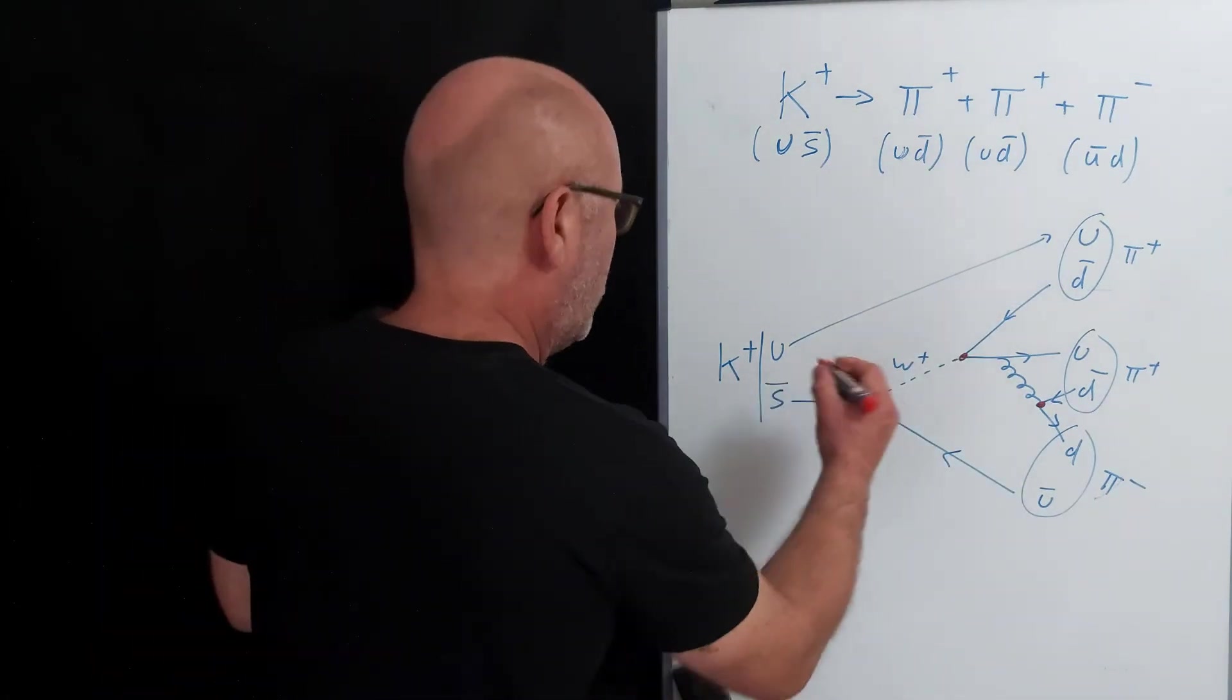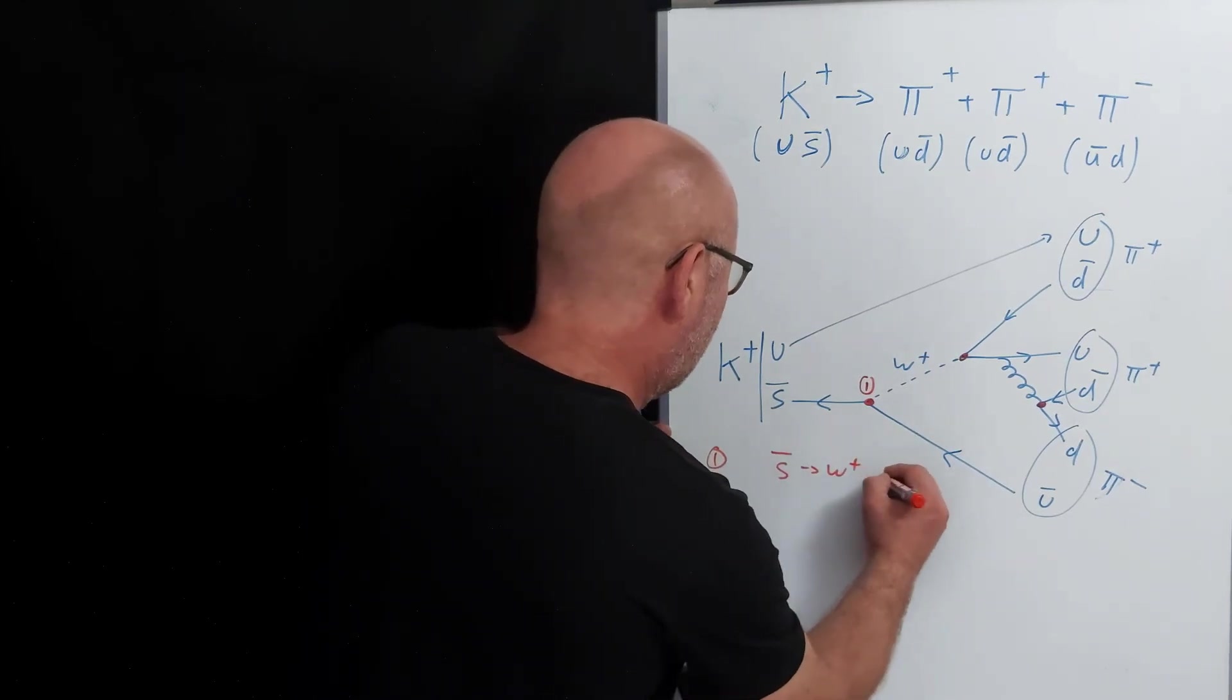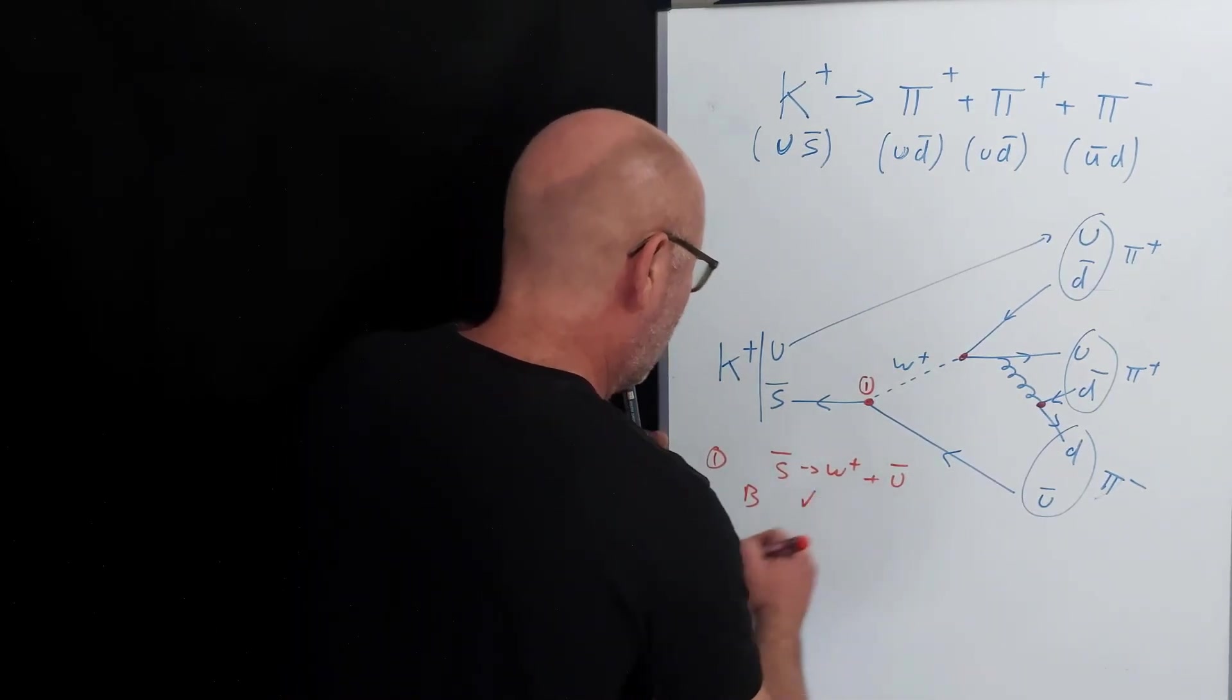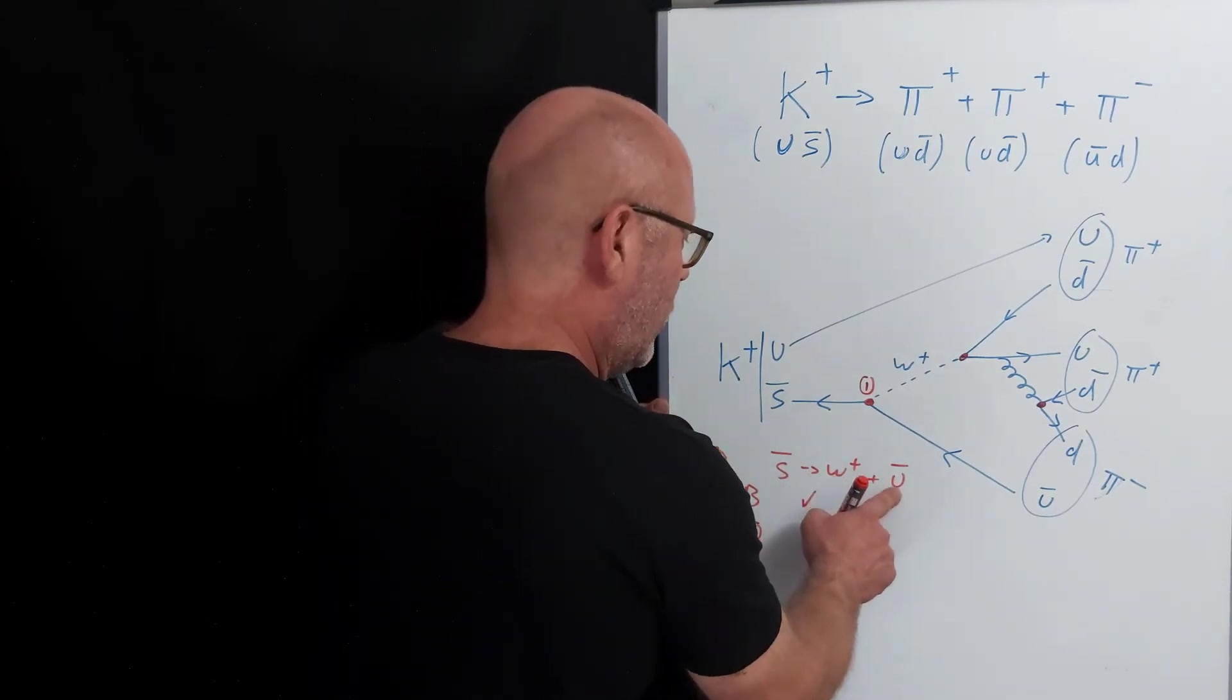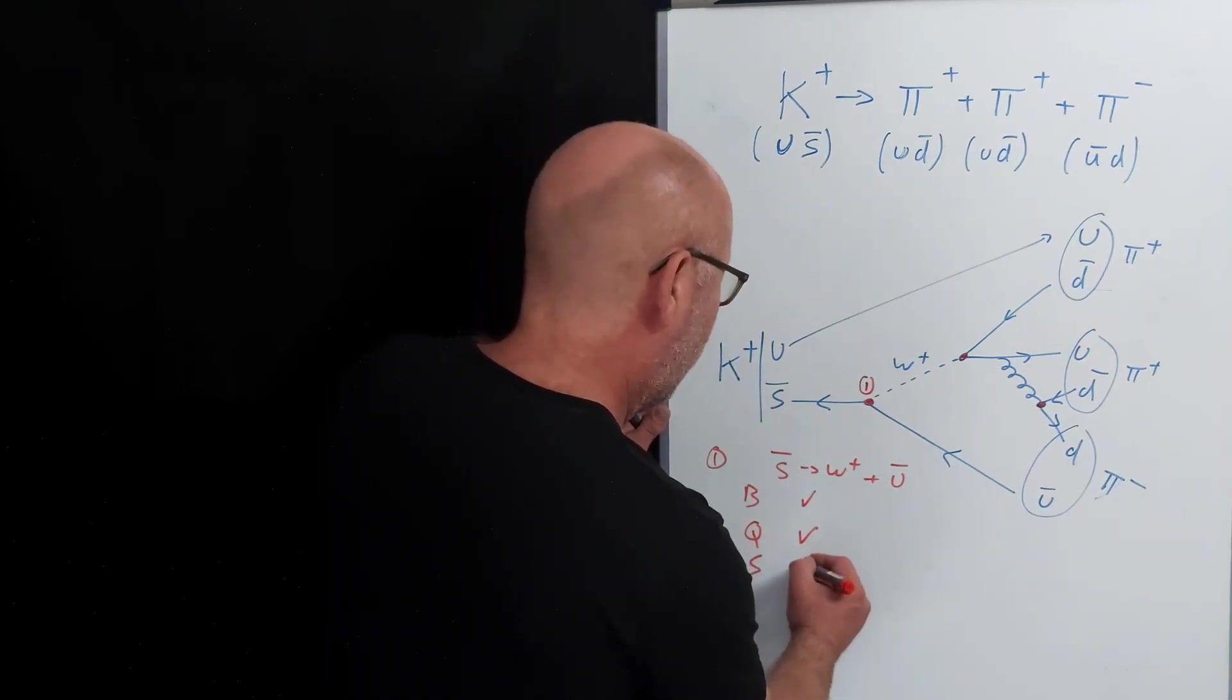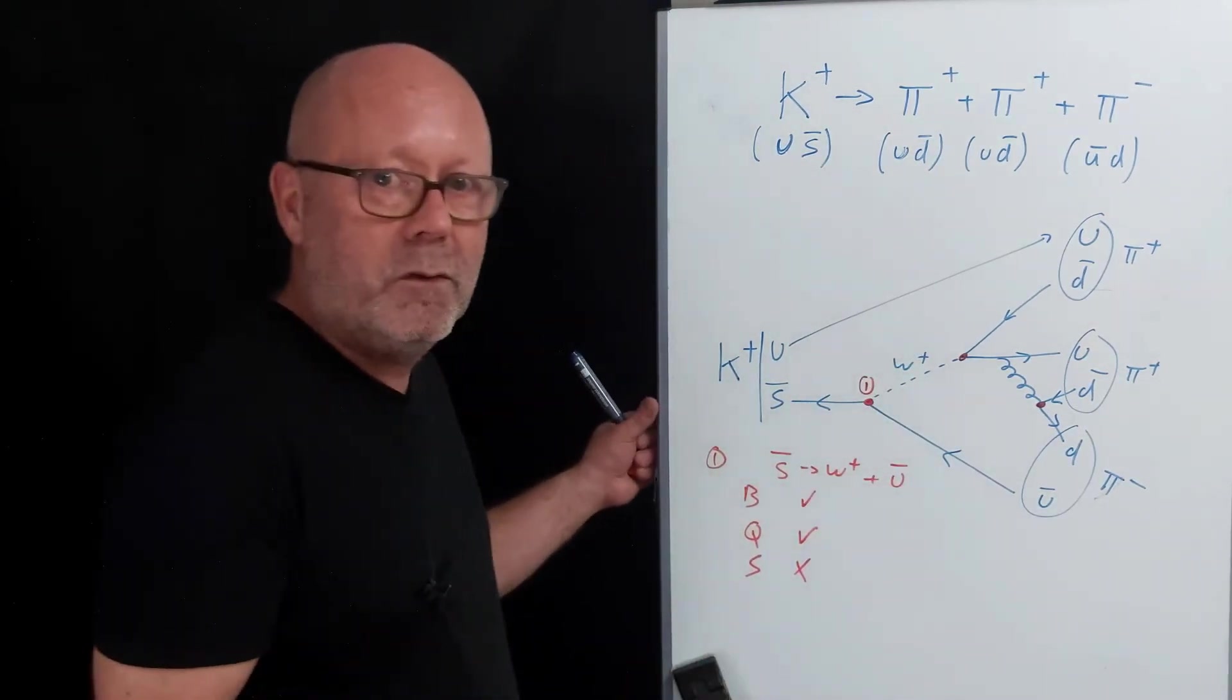Let's look at the first one. Let's put a little one here. I start with an anti-strange giving you a W plus plus an anti-up. So the baryon number, that's going to be minus one-third, minus one-third, so it's conserved. Charge, this is going to be one-third, this is going to be plus one, this is minus two-thirds, so one-third, one-third. Check. Leptons, there's no leptons involved. Strangeness, it's not conserved because I start with a strange but I end up with an up, so I could say it doesn't work. But it's the weak force which is involved, so I'm fine here.